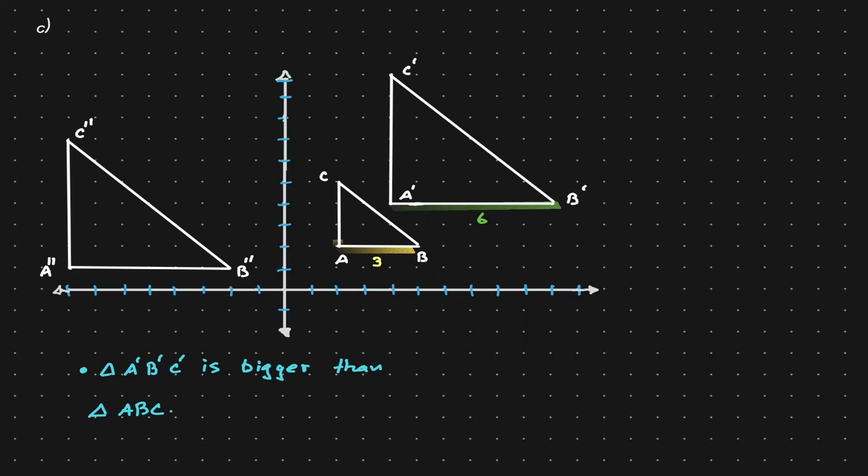The line segment AC also has a length of three, and the line segment A prime C prime has a length of six as well. We can double check the length of CB and C prime B prime, but it's still going to be the same. So at this point we can conclude that the scale factor is a value of two.